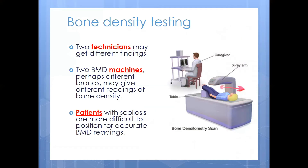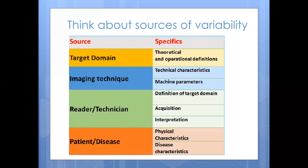Take the example of bone density testing. Two technicians may get different readings on the same patients. Two different BMD machines — perhaps different brands — could give different readings of bone density in the same patients. Patients with scoliosis are more difficult to position for accurate BMD readings, so they might have less consistency in their readings compared to patients without scoliosis. Sources of variability can come from imaging technique, technician issues, or patient issues, with more specific components to think through.